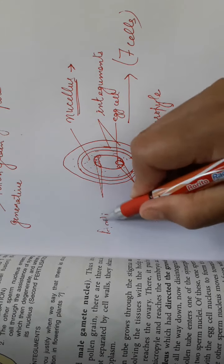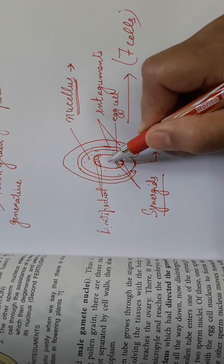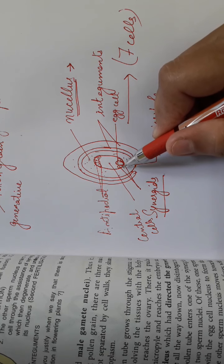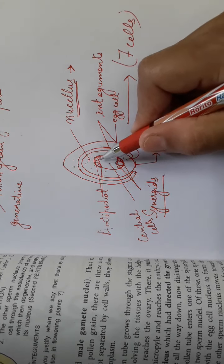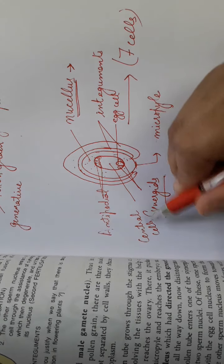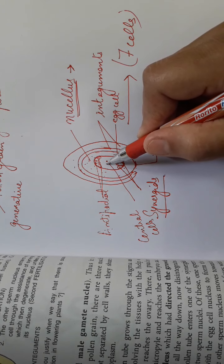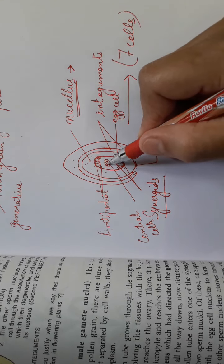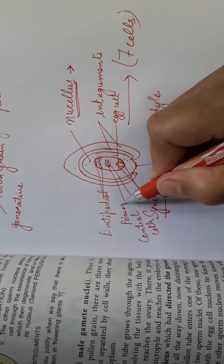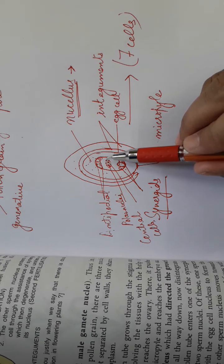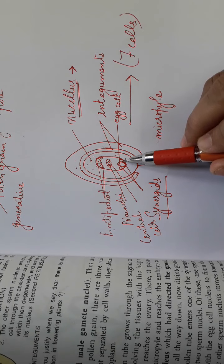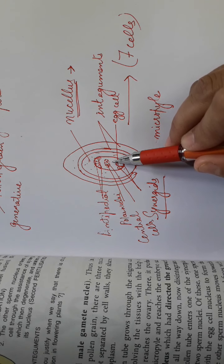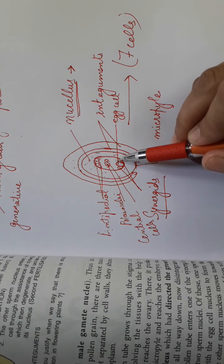There is one large central cell inside. So in total there are seven cells: three at one end — synergids and egg cell — and three at the opposite end — antipodal cells. The central cell is one cell but it contains two nuclei which are held together by some protoplasm. We call them polar nuclei. So inside the ovule there is an embryo sac with seven cells but eight nuclei, because the central cell contains two nuclei.